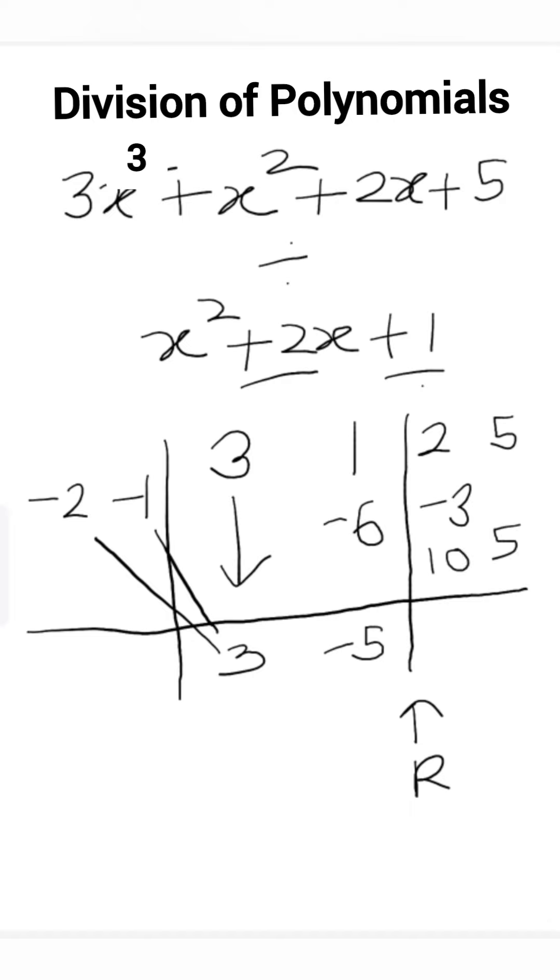Now we will add 2 minus 3 plus 10. So 2 minus 3 plus 10 we will get as 9, and 5 plus 5 equals 10.